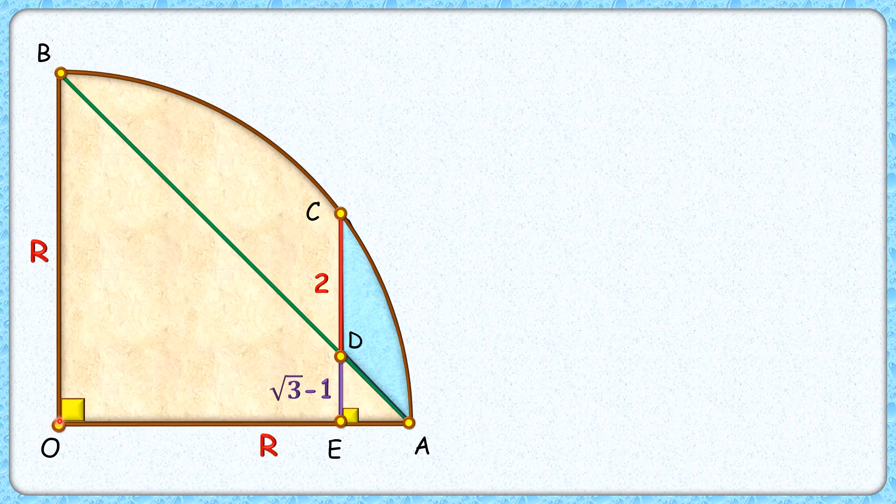Thus OC length will also be R centimeter. If you see this green line, it's making a contribution that this triangle OAB is an isosceles triangle, and thus this angle A is 45 degrees.